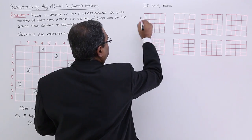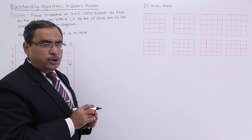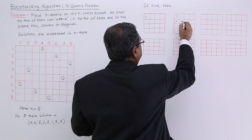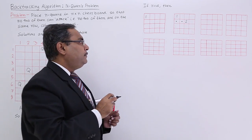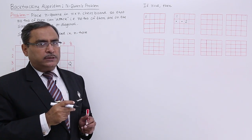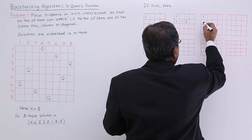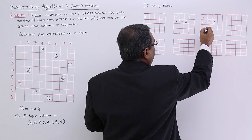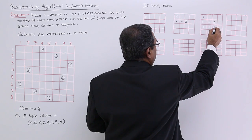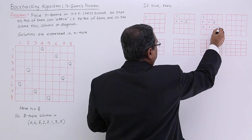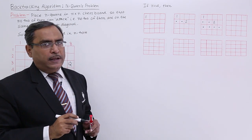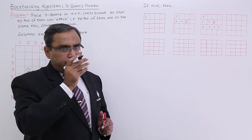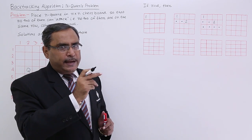The first queen can be placed in the first position. The second queen cannot be placed in the same column or the same diagonal, so the second queen can be placed in another valid position. Now going for the third queen: it cannot be placed due to same column or diagonal conflicts. So the third queen cannot be placed in this particular situation, and I shall backtrack — asking queen number 2 whether it has any other option.